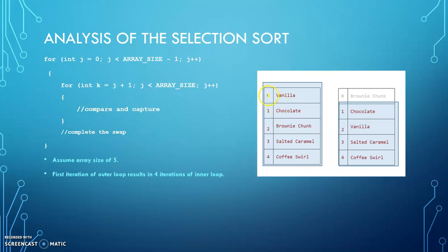We talked about that already. The first iteration, first time through ever, I'm looking at vanilla. I'm going to loop through these four things and see if I can find something that's less than vanilla. That's the first time through.